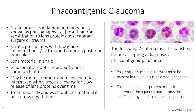Phacoantigenic glaucoma is a granulomatous inflammation resulting from sensitization to lens proteins post-cataract surgery or trauma. The previously used descriptor was phacoanaphylaxis; however, this term is no longer used since the disease process is not an allergic response. Occurrence is now uncommon, less than 1% of cataract surgeries, after introduction of modern phacoemulsification techniques, which enhanced removal of most or all lens material at the time of cataract surgery.